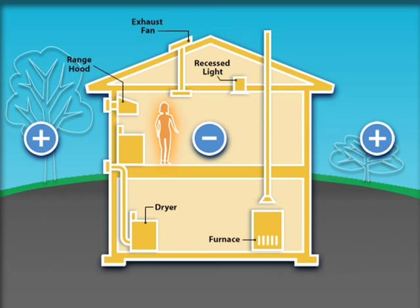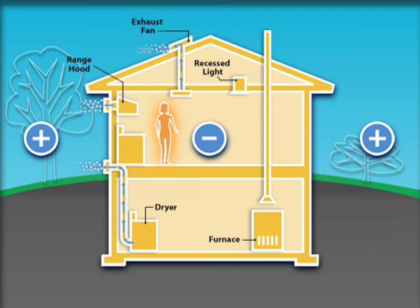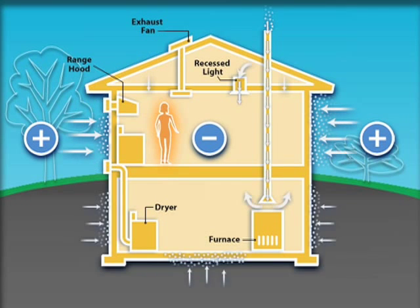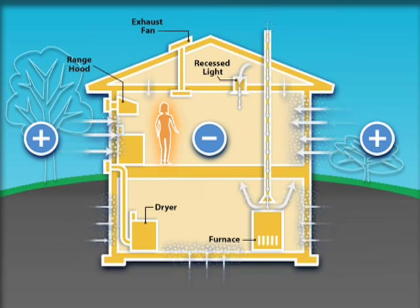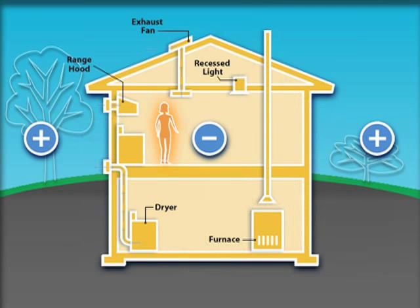Another source of air pressure can come from our mechanical systems. Each time we operate a fan, whether the range hood, central vac, or clothes dryer, we create a difference in pressure that can draw air and water vapor into the home. This replacement air enters the home through the path of least resistance, which often times is the flue or chimney. This can compromise indoor air quality.